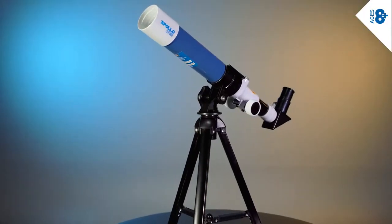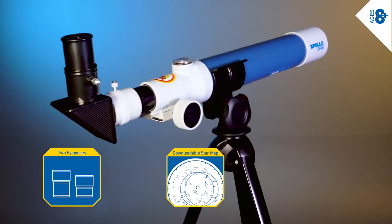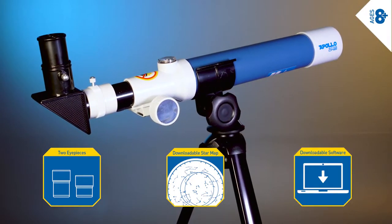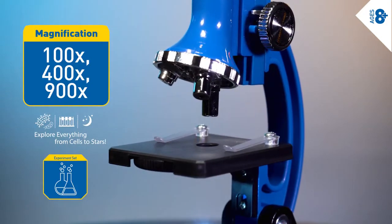The easy-to-use refractor telescope comes with two eyepieces and a tabletop tripod, a star map, and astronomy software to help observers navigate the night sky. The solid microscope has three levels of magnification and is